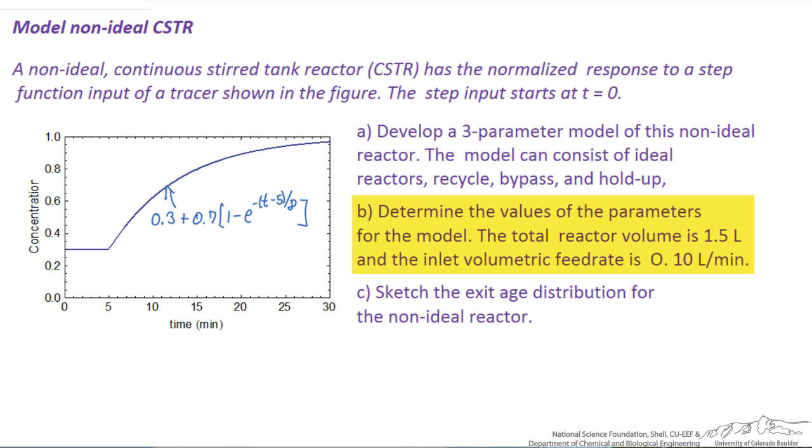And the inlet volumetric flow rate is 0.1 liters per minute. And then finally it says, can we sketch the exit age distribution for this non-ideal reactor?